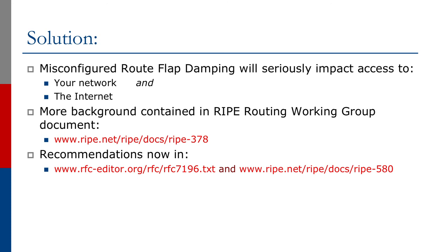Misconfigured route flap damping will seriously impact access both to the local network and to the whole internet. More background is in the RIPE Routing Working Group document RIPE-378, and more recent work can be found in RIPE-580. The IETF has also produced RFC 7196, which provides recommendations for properly configured route flap damping. If route flap damping is necessary for your network, I strongly encourage you to read RFC 7196 and RIPE-580 before simply turning on the vendor defaults.